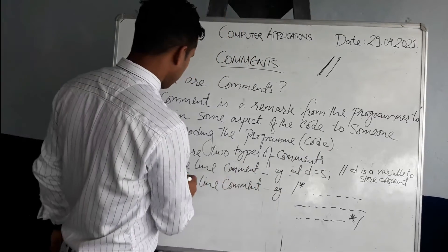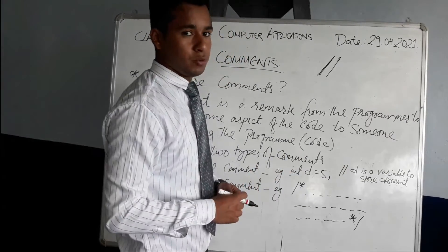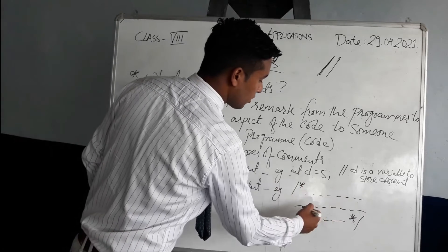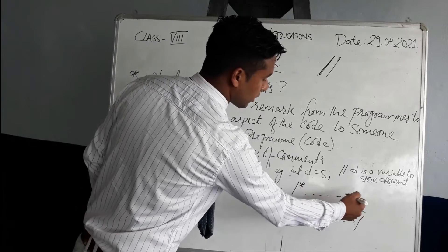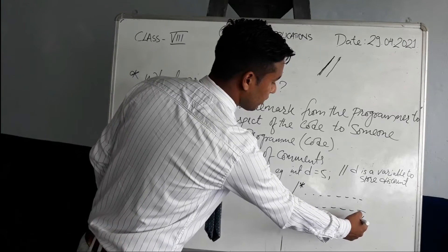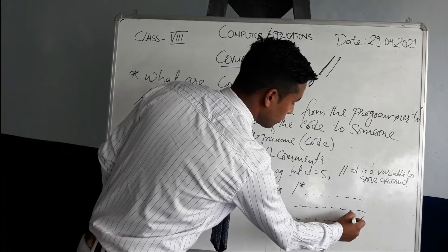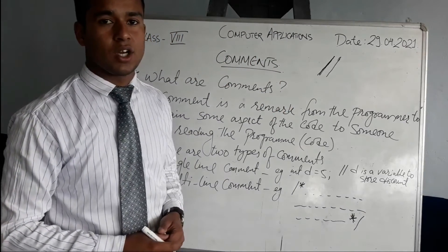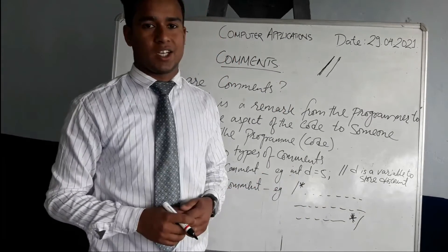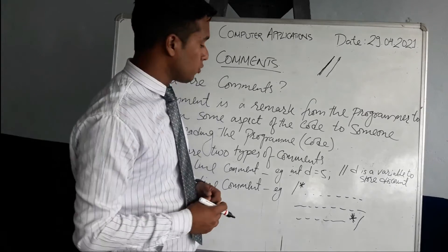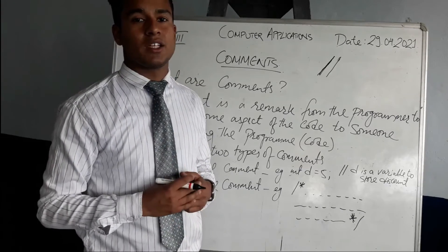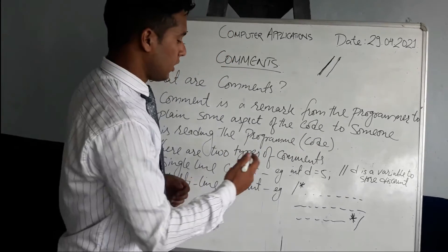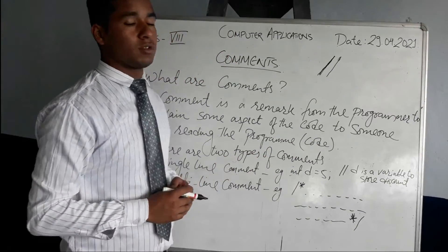For a multi-line comment, a different symbol is used: forward slash followed by an asterisk ( /* ), and the comment can span more than one line. To end the multi-line comment, you use an asterisk followed by a forward slash ( */ ). So these are the two types of comments — single-line comment using // and multi-line comment using /* ... */.